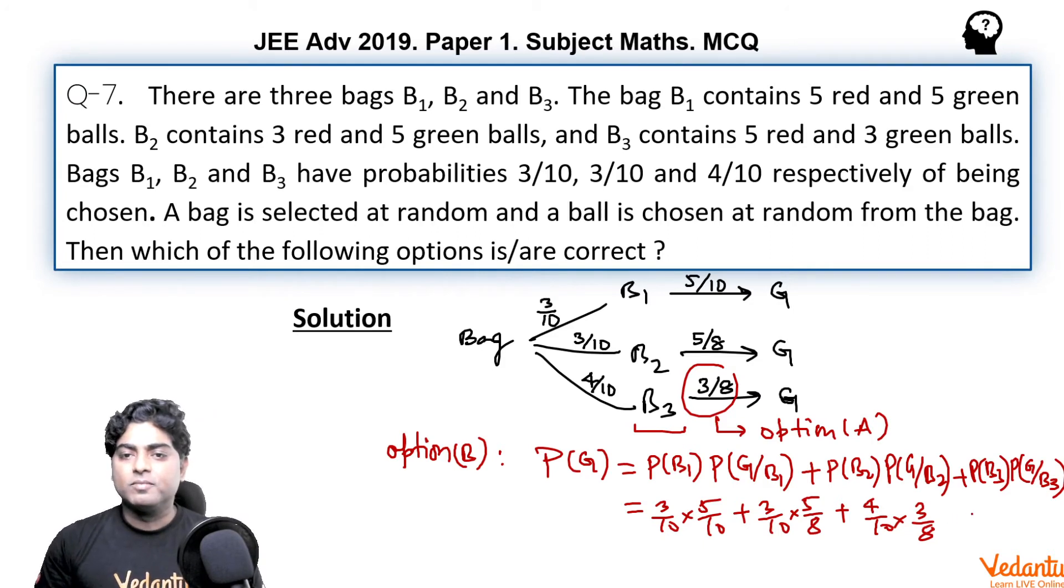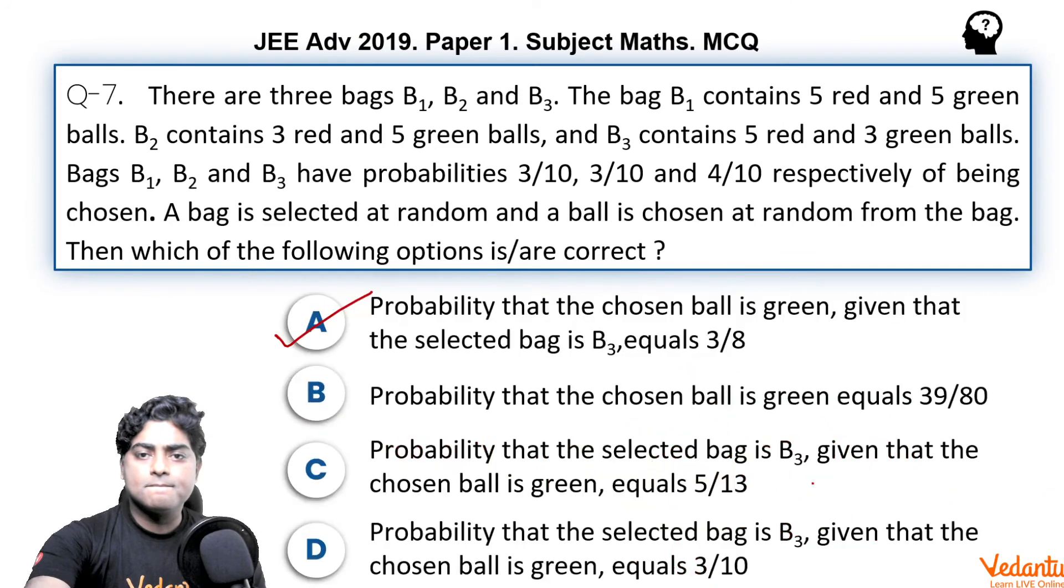When you calculate it, finally you will get it as 120 plus 270 that is 390 upon 800 that is 39 upon 80. In option B, 39 upon 80 was given. So option B is also correct.